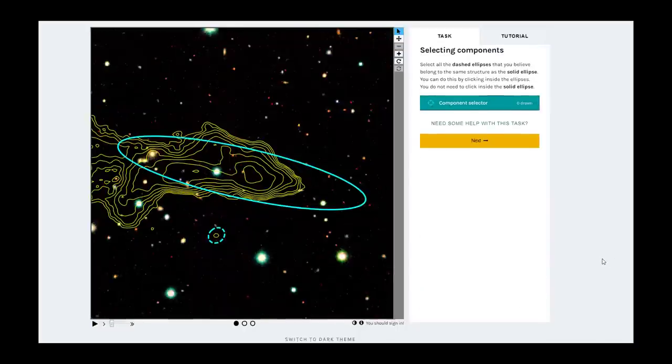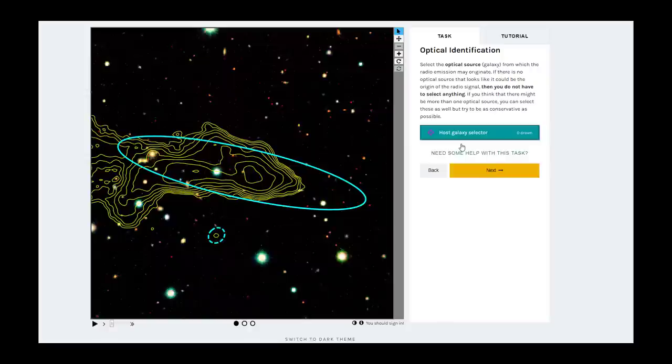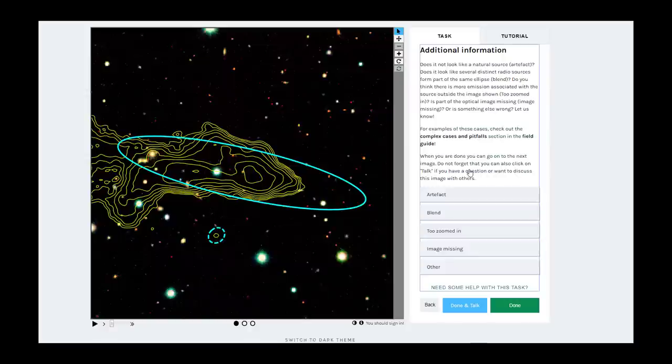This is an example of a source that is too zoomed in to classify. A part of the radio emission is outside of the image, therefore, we don't want to click anything for the first two tasks. For the last task, select too zoomed in.